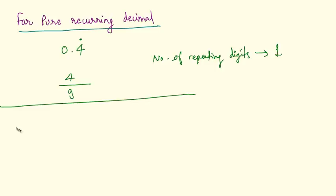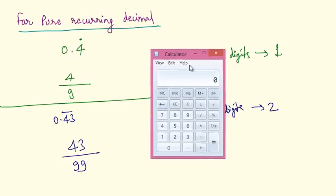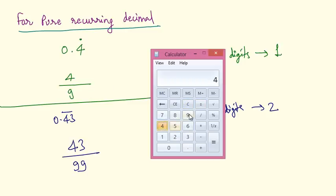For the number 0.43 recurring, where 434343 goes on forever, the number of repeating digits is 2 — both 4 and 3 are repeating continuously. So I write 43 (the number without the decimal point) and divide by two 9s, giving 43/99. Using a calculator, dividing 43 by 99 gives exactly 0.43434343, and dividing 4 by 9 gives 0.4 recurring — both correct.